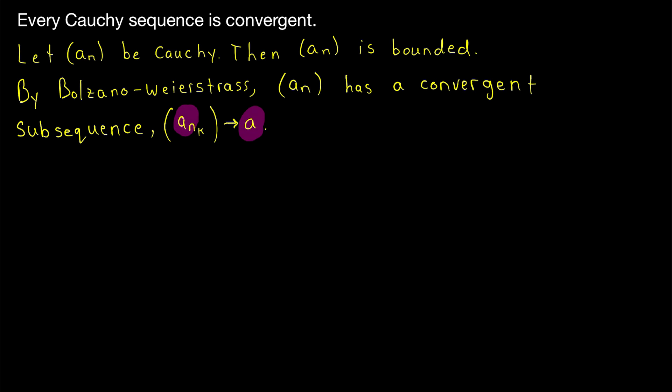We know this subsequence of AN converges to A. So if AN converges to anything, it has to converge to A. You may recall that a sequence converges to a limit if and only if all of its subsequences also converge to that limit. So if AN is convergent, like we think, it's definitely converging to A. So let's try to prove that it converges to A.